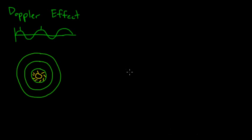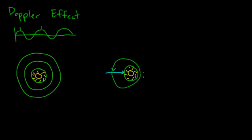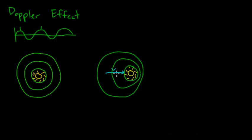Now let's take that same source and say it's moving with some velocity in one direction. The wave fronts will look different: the closest crest is still centered around the source, but the wave crests farther out appear slightly compressed in front of the object and slightly stretched out behind it. This is because those farther-out crests were emitted at earlier moments when the source was farther to the left, and in the meantime the source has moved.